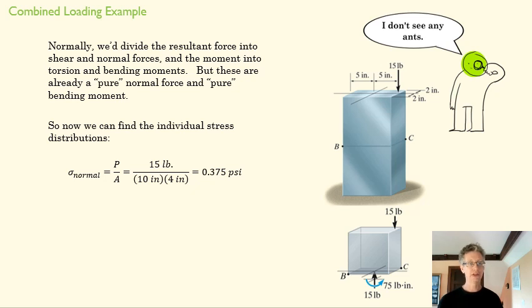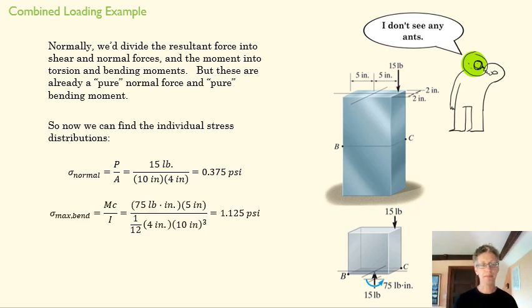So now we find the stress distributions on this plane here, because we want to know what our stresses are at B and C. The normal stress is going to be evenly spread through this area because we're relatively far from the point of application. So we just use P over A, and that's 15 pounds over the area of the cross-section. So we have a uniform stress of 0.375 PSI in that plane. And that's a compressive stress, because it's being pressed down. That monkey is pressing down on it. Now we have a bending stress here. That bending stress is going to vary. It's going to be compressive on this side. It's going to be tensile on this side.